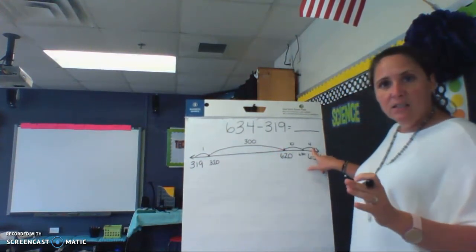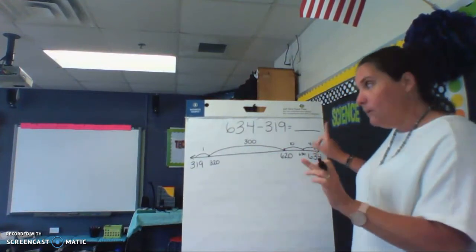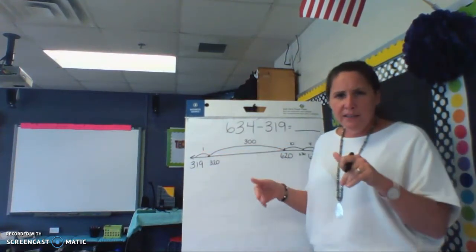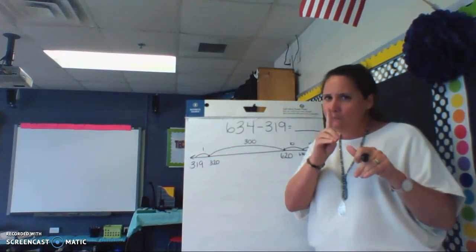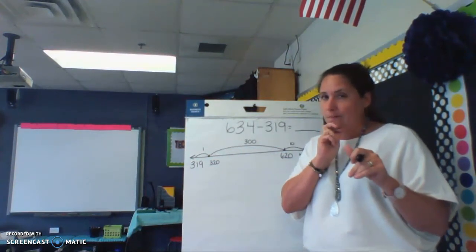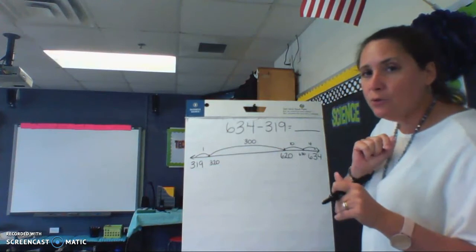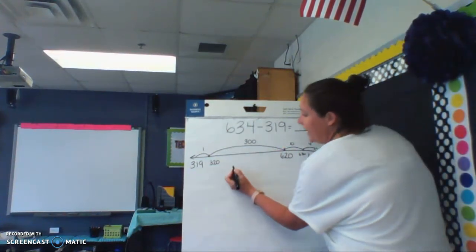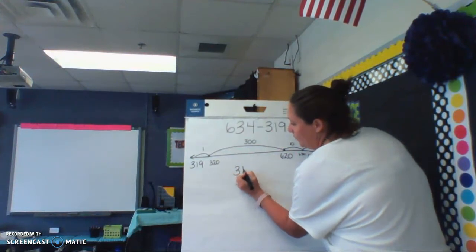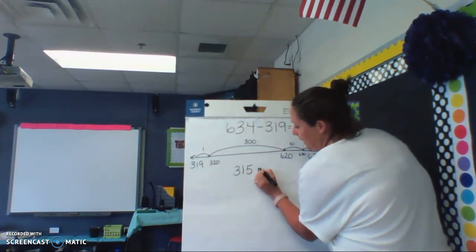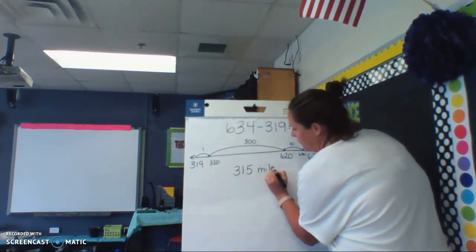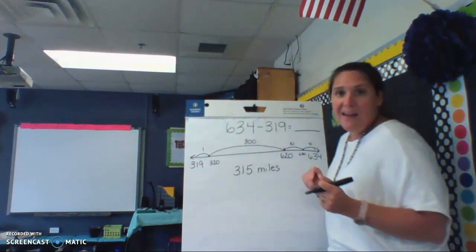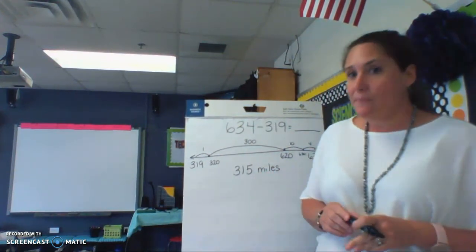But wait, wait, wait, don't forget this one. So 314 plus one more mile is what? If you said 315, then that's exactly right. So they still have left 315 miles to travel probably on that next day to get to grandma's house.